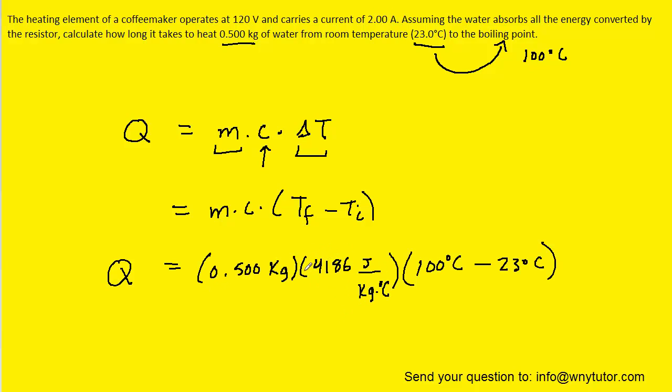Notice we've used 4,186 for the specific heat of water. When we plug this into our calculators, we get approximately 1.61 × 10^5 joules. The unit is joules because the kilograms and degrees Celsius cancel, leaving us with joules.